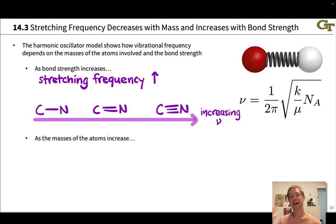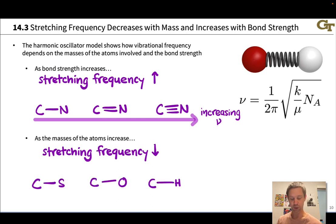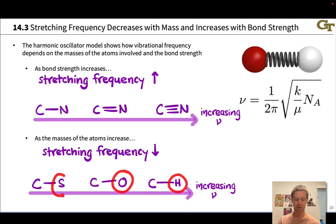As we increase the masses of the atoms, the stretching frequency decreases. We can very much see this in infrared spectra. For example, if we consider a carbon-sulfur bond versus a carbon-oxygen bond versus a carbon-hydrogen bond, in this series, the vibrational frequency is increasing from C-S to C-O to C-H as the mass of the atom involved decreases. The lighter mass oscillates at a higher frequency, both when it comes to springs and bonds.